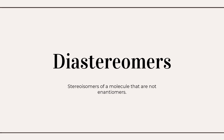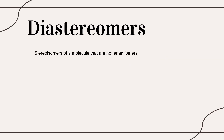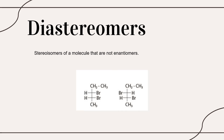What about diastereomers? Diastereomers are stereoisomers that are not related as mirror images and are therefore not enantiomers — they are not mirror images and are non-superimposable. In this example, these two stereoisomers have the same molecular formula and the same arrangement of atoms, but are not mirror images and are therefore diastereomers. The molecule on the left has all its bromine atoms on the right side, while in the other molecule, the bromine atoms are separated — one is on the left side and the other on the right side.